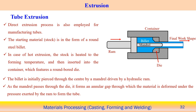Tube extrusion uses the direct extrusion process with a mandrel added to the RAM. The stock is heated to a certain temperature, then inserted into the container bounded by the die along with the mandrel. The mandrel creates a hollow section, and the gap between the mandrel and die decides the wall thickness of the tube, which is deformed under the pressure exerted by the RAM.